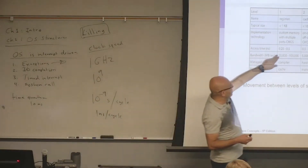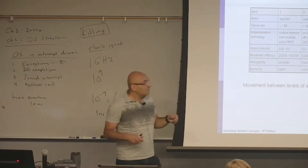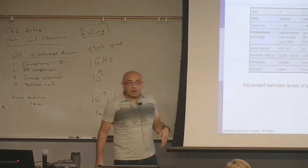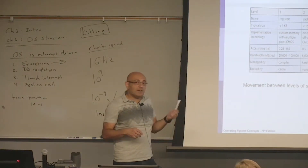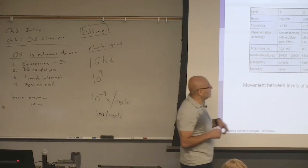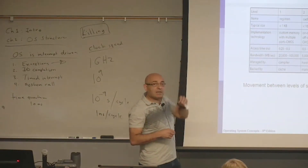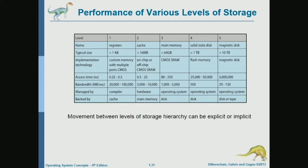You can access the register in one cycle, and the cache within a couple of cycles — though L2 or L3 cache may take longer. For example, 25 nanoseconds on a four-gigahertz processor is 100 cycles, which is probably an L3 cache. Main memory access can take up to hundreds of cycles, a solid state disk tens of thousands, and a magnetic disk millions of nanoseconds or cycles. They vary considerably in speed.